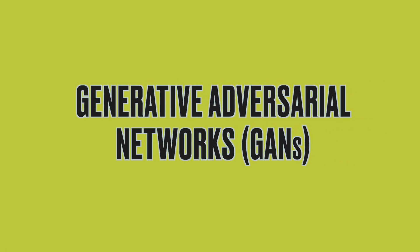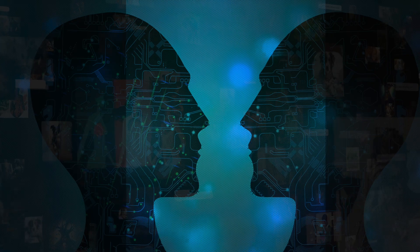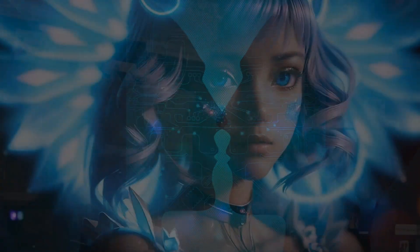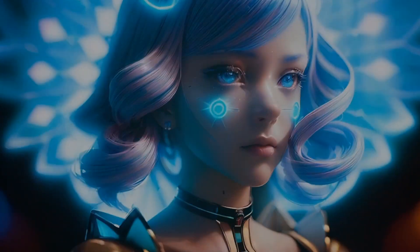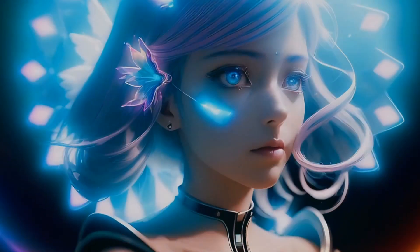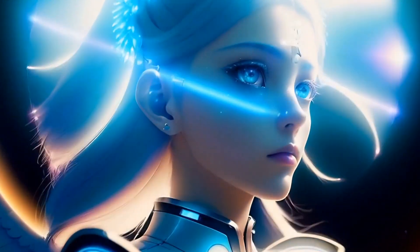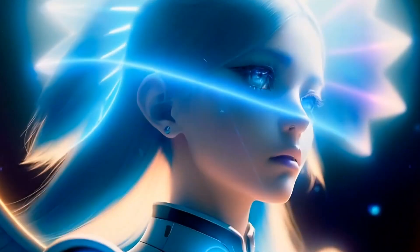Then we have generative adversarial networks, or GANs. Picture two AIs in a creative showdown: one AI, the generator, creates an image, while the other, the discriminator, judges it. They constantly challenge each other, and through this competition they learn to produce incredibly realistic and complex content. It's like a digital game of artistry and critique that has been revolutionizing fields from gaming to fashion.